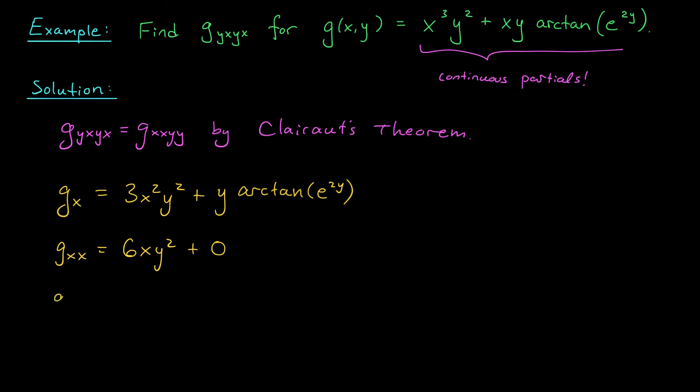Now, doing derivatives with respect to y is easy. Gxxy is simply 12xy. And therefore, gxxyy, which is equal to gyxyx, is simply 12x. Now, come on. You got to admit, that's pretty cute. By switching the order of differentiation in a clever way, we arrived at our answer with minimal suffering.